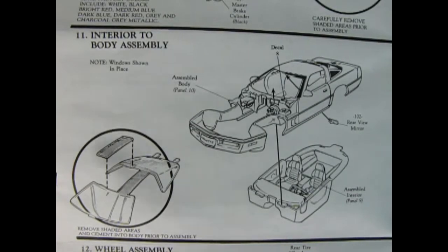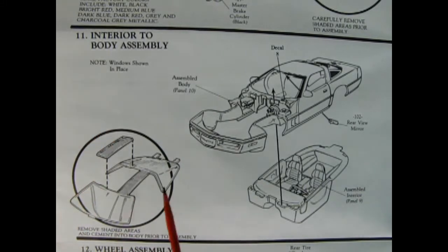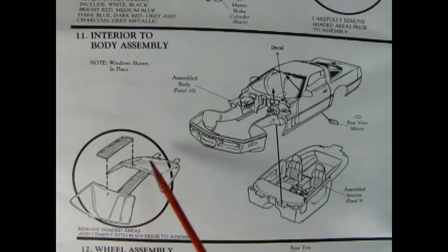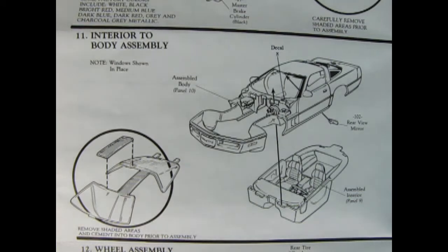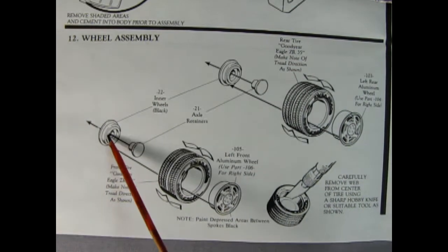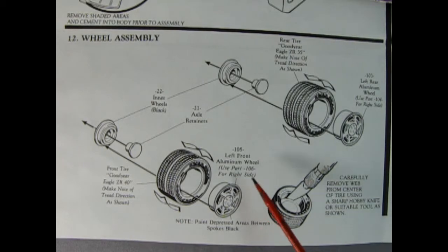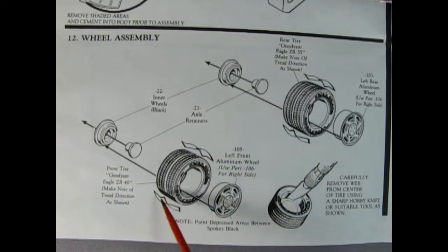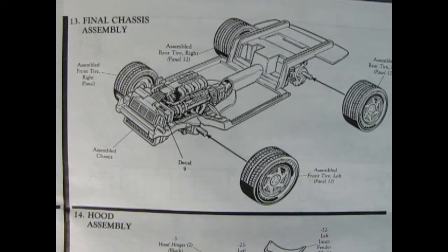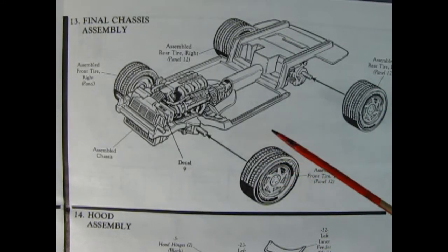Panel 11 shows our interior to body assembly. It says note windows shown in place. The rear view mirrors will go up inside here and then our assembled interior will drop in place. It says for the windows to remove the shaded areas and cement into body prior to assembly. So those are the cross beams. Panel 12 shows our wheel assembly going together and this is the basic wheel, tire, backing pin and rear hub for each of the wheels. And it says to note the direction of the tires, how they're going on there. Remember we got the wider ones going in the back and the narrow ones going in the front. You've got to take your hobby knife and cut out this web in the middle. Panel 13 shows the final chassis assembly, which of course is just gluing wheels on.